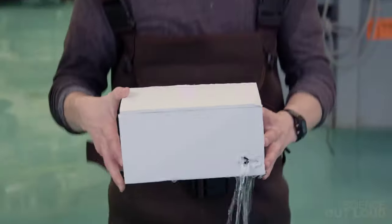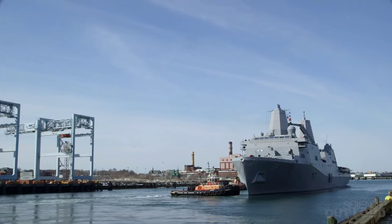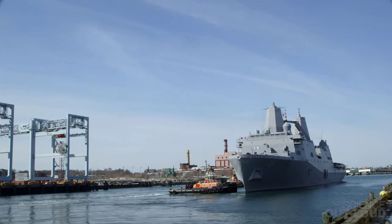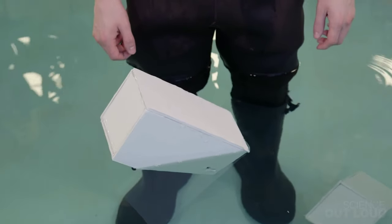This box uses the same kind of design that naval architects use to prevent ships a thousand times bigger from sinking. What's so special about this box that prevents it from sinking even with the big hole in its side?